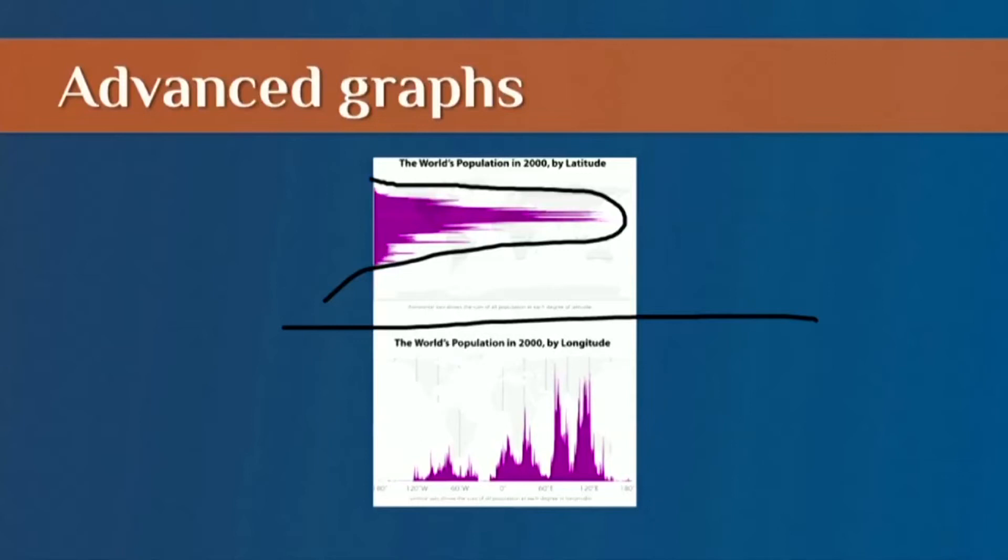The same can't be said about longitude, right? So if we look at the bottom graph, we don't get a nice normal distribution. Instead we get a peak here, a peak here. What are those peaks?